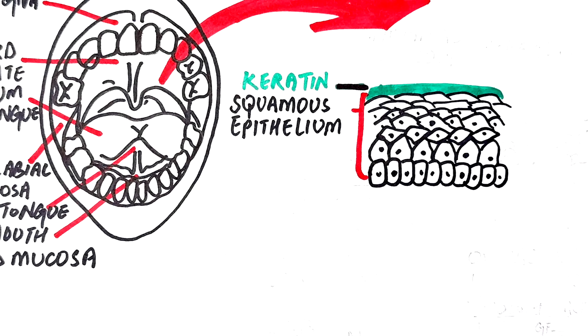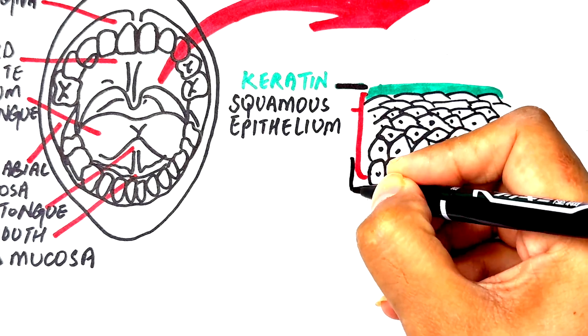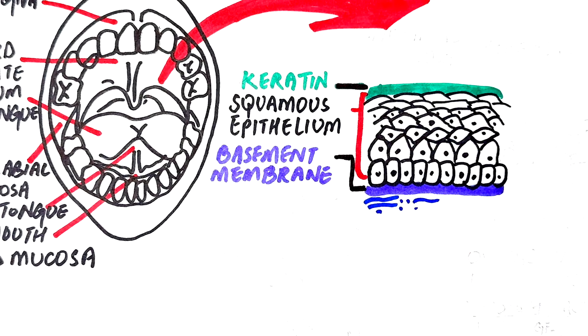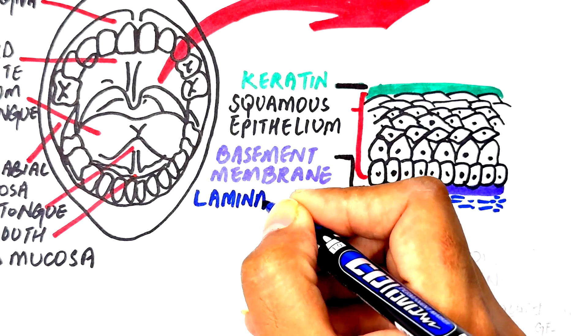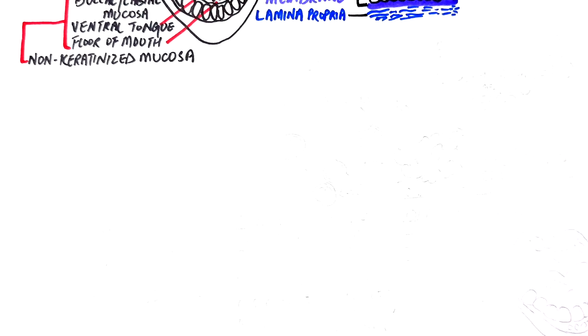Beneath this epithelial layer lies the lamina propria, a connective tissue layer separated from the epithelium by a basement membrane. In many regions, a deeper layer called the submucosa, composed of dense irregular connective tissue, is also present. In some areas, however, the submucosa is absent and the lamina propria is directly bound to underlying bone or muscle. For a more detailed explanation of the oral mucosa structure, check out the separate video dedicated to this topic.